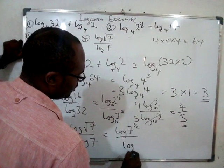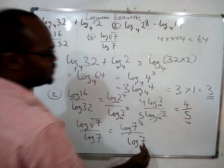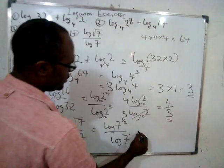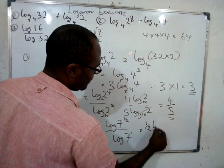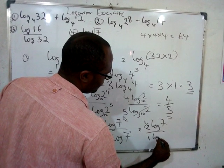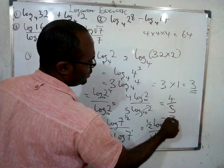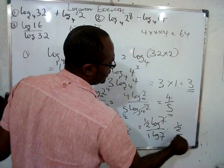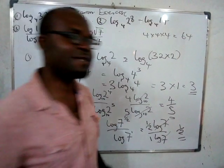So 7 is the same thing as saying 7 to power 1/2, all over log7¹. This is the same thing as saying (1/2)log7 all over 1log7. Log7 goes with log7. Now we have 1/2 divided by 1, which is 1/2, and that is the answer.